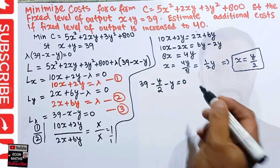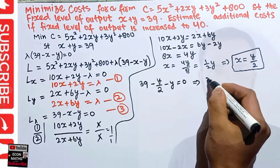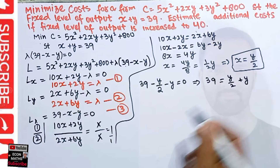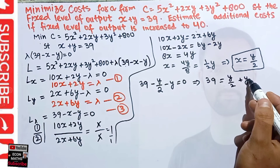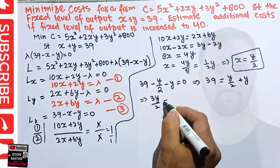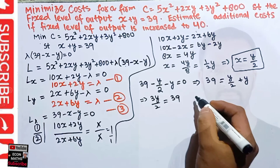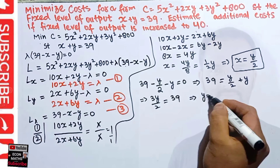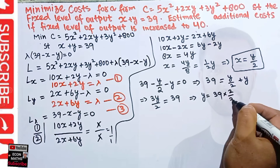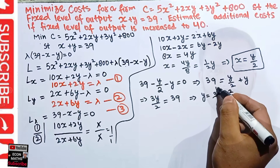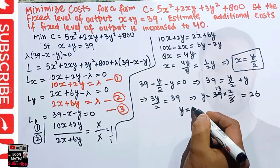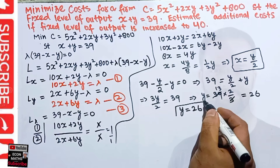Substituting x = y/2 into equation three: 39 − y/2 − y = 0. Rearranging: 39 = y/2 + y = 3y/2. Therefore 3y/2 = 39, which implies y = 39 × (2/3) = 26. So the optimal value of y is 26.